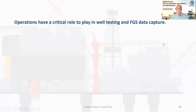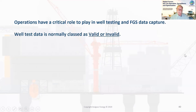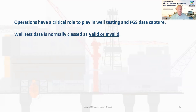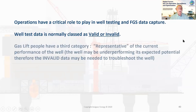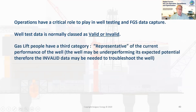Operations have a critical role to play in well testing and flowing gradient survey data capture. If someone holds up a pen — that's also the world's smallest test separator. If an operator wants to give you some numbers and you're not out there to see what he's doing, he can generate a well test from a pen and you're not going to know what he's done. Well test data is normally classified as valid or invalid. Gas lift people have a third category: representative. It has to be representative of the current performance of the well. If a well is underperforming, we need the invalid data to troubleshoot the well and find out what's wrong with it.